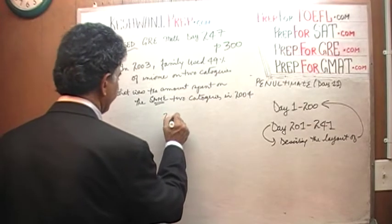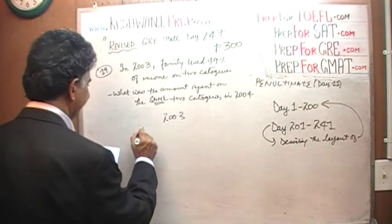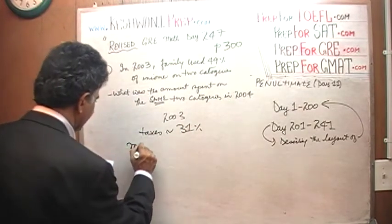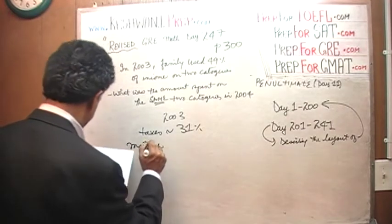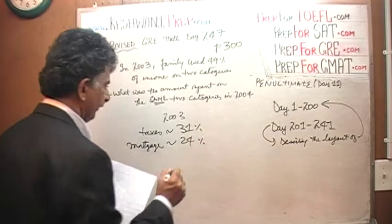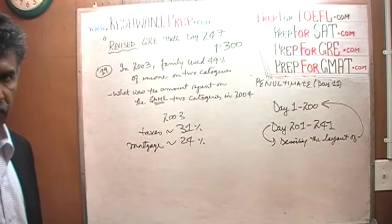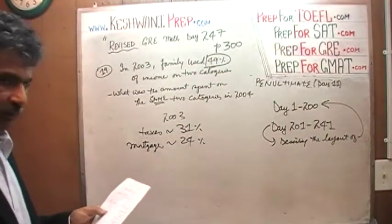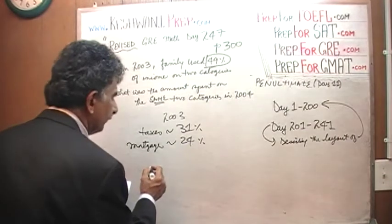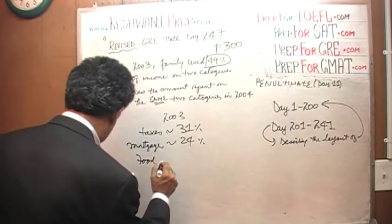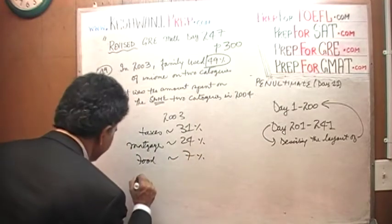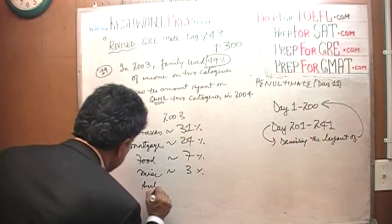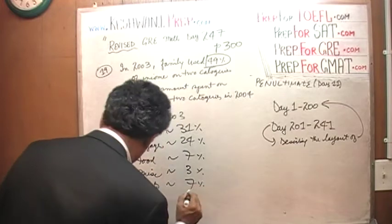So this is 2003 we are dealing here. The first one is taxes, which is 31% approximately. Then we have mortgage. Mortgage is approximately 24%. And as we can clearly see, 24 and 31 will not add up to 49%. We need them to add up to 49%. So those are not the two categories we are talking about. Then we have food, which is about 7%. We have miscellaneous, which is about 3%. We have auto, which is about 7%. Then we have utilities, which is about 4%.